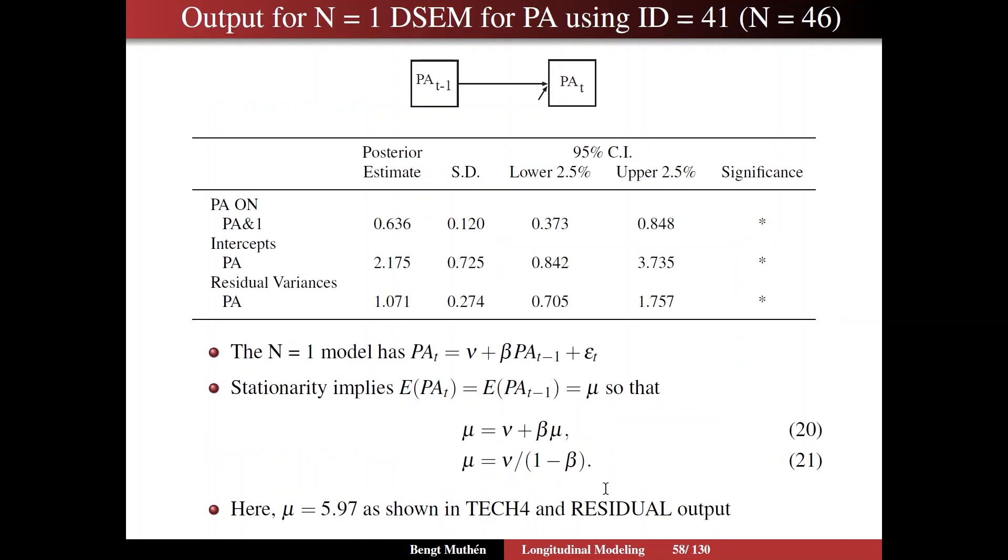On slide 58, take a look at the estimates for these three parameters. We see this autoregressive estimate, 0.636, so that's a little higher than for the overall estimate for everyone. It is significant. Even though it's only for one person, we can find significance of it. And we get the intercept and the residual variance. Once again, we can ask ourselves, what's the mean of this person's model or variables in the model?